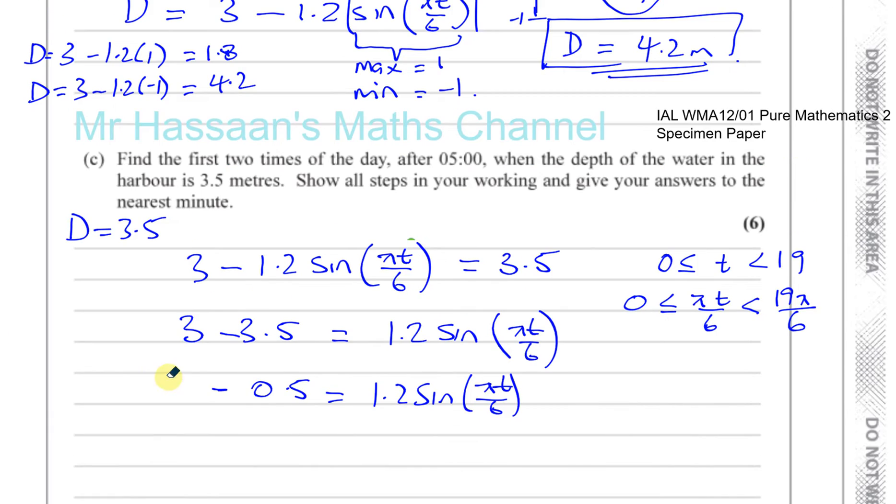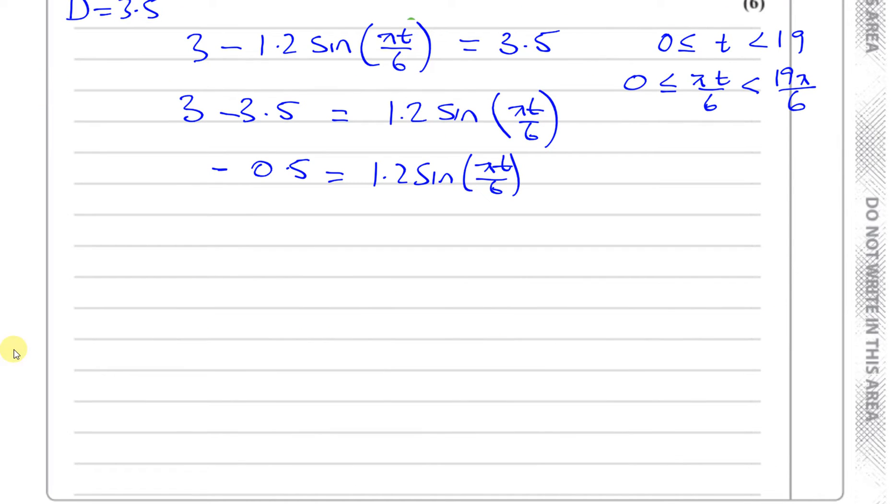I want to make sine pi t over 6 the subject of this formula. So I can say 3 minus 3.5 equals 1.2 sine pi t over 6. So that's going to give me minus 0.5 equals 1.2 times sine pi t over 6.